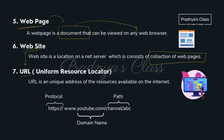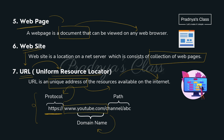Moving ahead to the next important topic: URL — Uniform Resource Locator — which is a unique address of a resource available on the internet. The format starts with the secured form of HTTP, that is HTTPS, which is the protocol, followed by the domain name, and then the path of the particular resource or web page. So URL consists of three parts: protocol, domain name, and path.